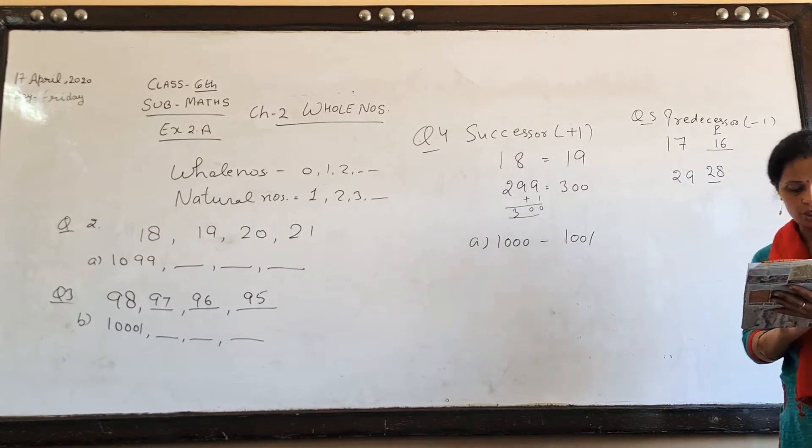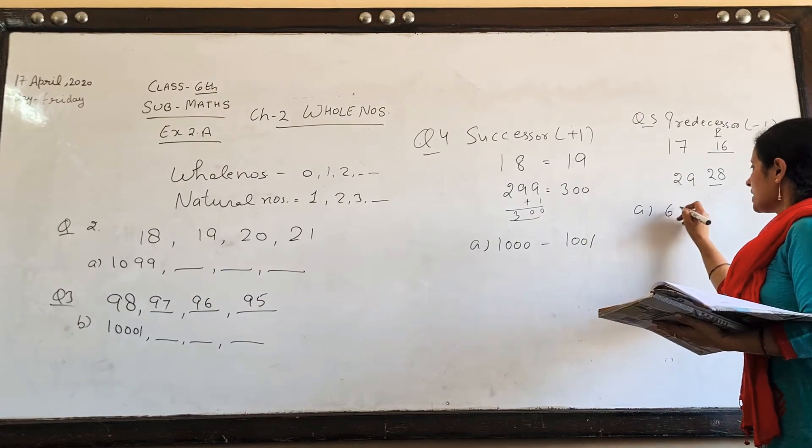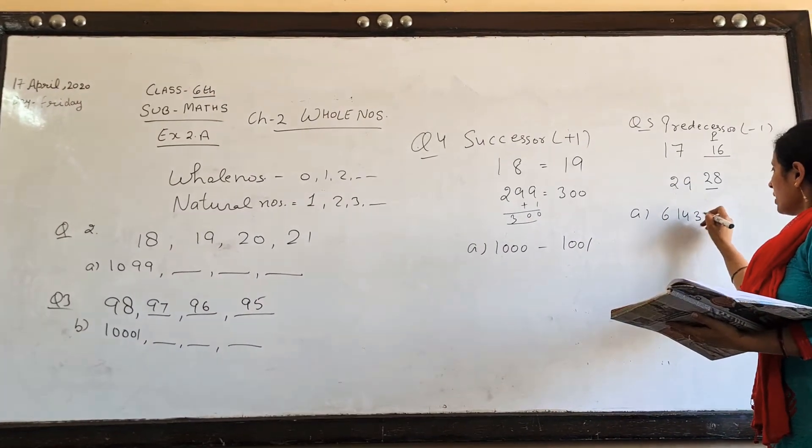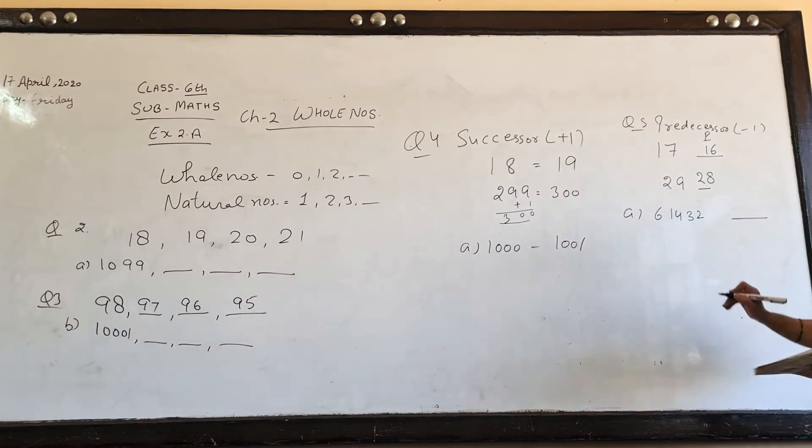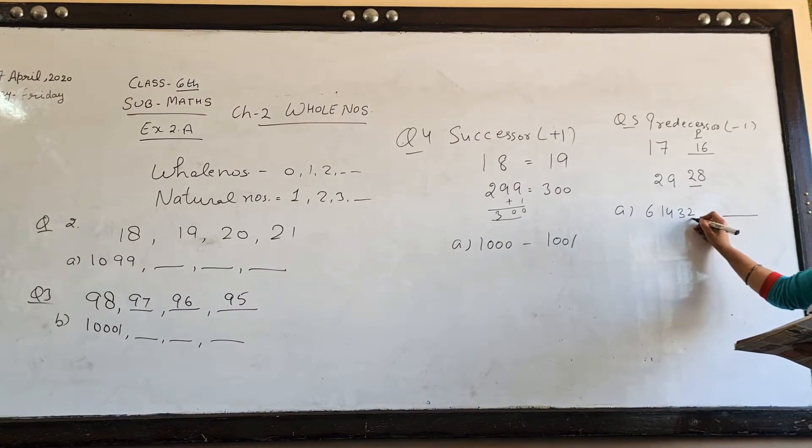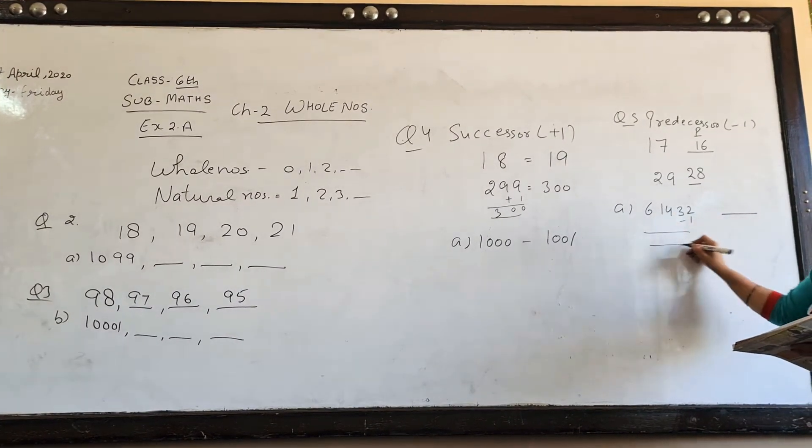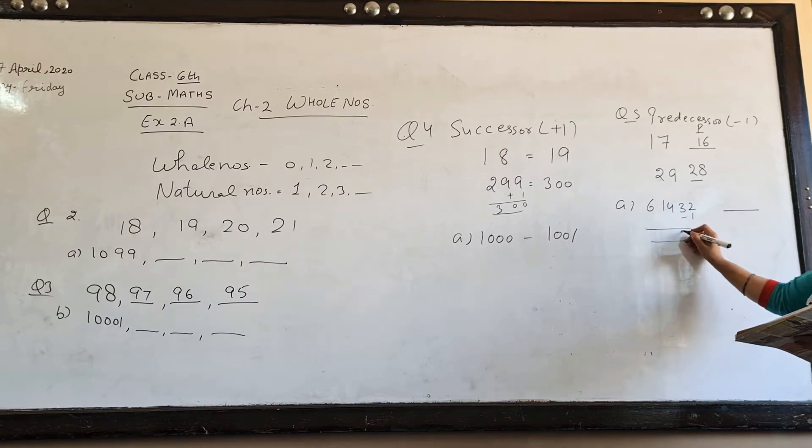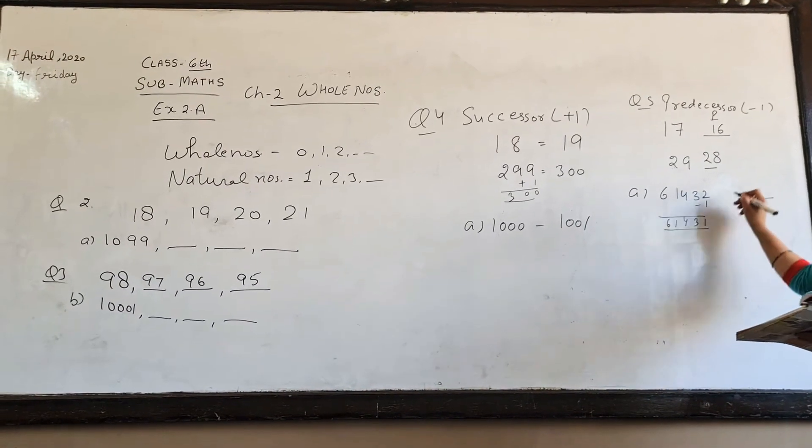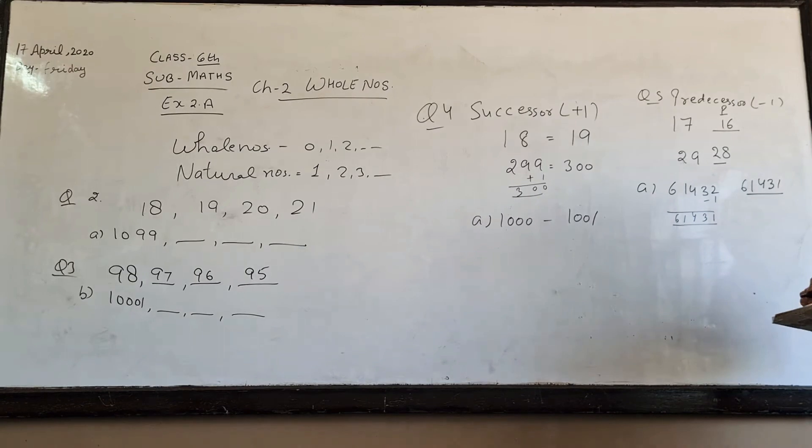In this way, your question is, what is the predecessor of 6143? If you have a predecessor, then you will have 1-1 space. If you have 10-1, the rest will be 6, 1, 4, 3, 4.